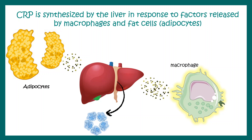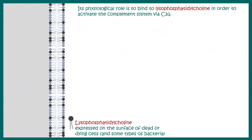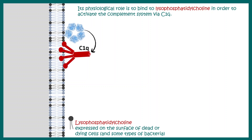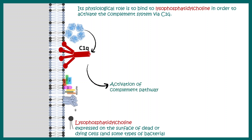Let's look at the biological function of C-reactive protein. CRP can actually bind to lysophosphatidylcholine, which is found in dead and decaying cells. After binding to this molecule, it can activate the complement system, which is one kind of innate immune response. Specifically, CRP binds lysophosphatidylcholine and recruits a complement protein called C1Q, ultimately leading to activation of the complement cascade.